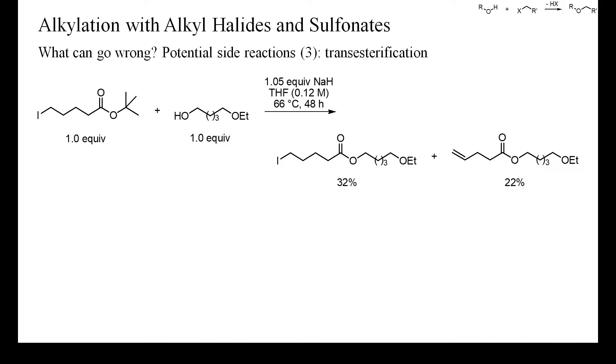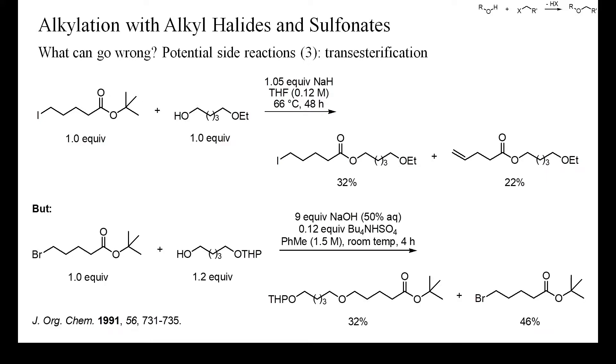Because of their high basicity, alkoxides can cause the transesterification of even sterically demanding esters, as shown here. In this instance, transesterification probably proceeded by alpha-deprotonation of the ester, followed by elimination of tert-butoxide and formation of a ketene. Interestingly, this reaction was faster than substitution of iodide. Still more surprisingly, this unwanted transesterification could be suppressed by conducting the reaction in a biphasic mixture of toluene and aqueous sodium hydroxide.